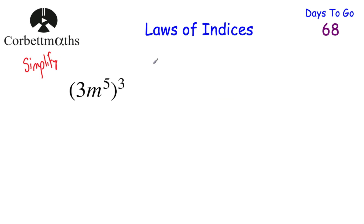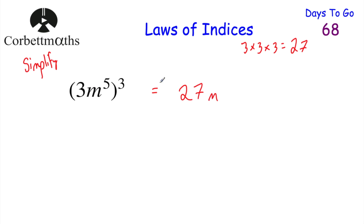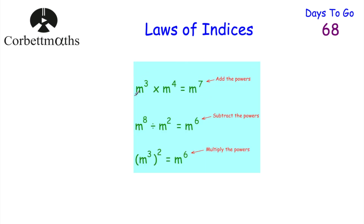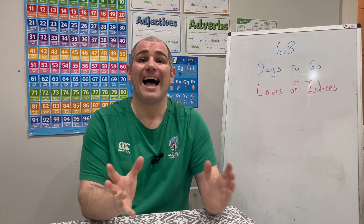Our last question: simplify 3m to the power of 5, all cubed. Press pause and try this. First, deal with the 3 cubed: 3 times 3 is 9, times 3 is 27 — so 3 cubed is 27. Then for m, we have a power of a power: multiply 5 by 3 to get 15. So the answer is 27m to the power of 15. To summarise the laws of indices: multiplying with the same base — add the powers; dividing with the same base — subtract the powers; power of a power — multiply the powers together.